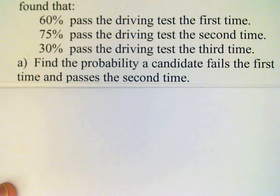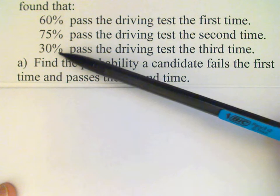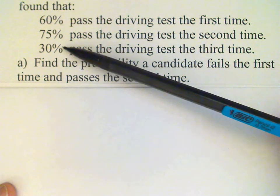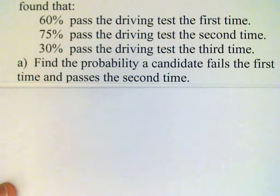Obviously, the candidate is not going to take the driving test a second time if he or she passed the first time. And this number here is contingent on the candidate failing the driving test twice.